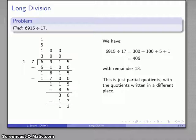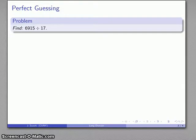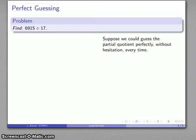Alright, well now let's suppose that we had a magical gift and we could guess perfectly without making any mistakes whatsoever. And so if I could guess the partial quotients perfectly without hesitation every single time, I might make this go a little bit more efficiently the following way.